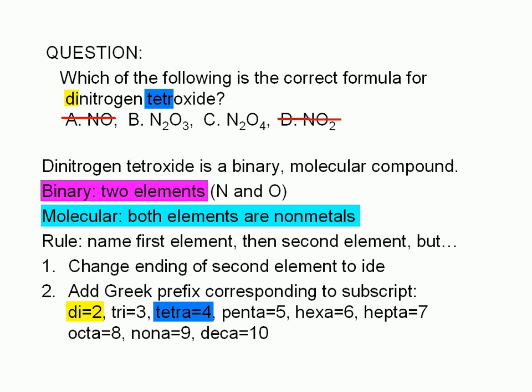The prefix tetra corresponds to a subscript of 4. Therefore, the subscript for oxygen in this compound is 4. It is customary to drop the A in tetra when followed by the letter O. So instead of tetraoxide, we simply say tetroxide.